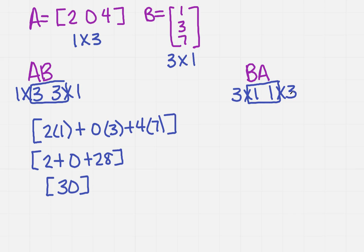How are you going to do that? It's actually much easier. I want to rewrite it because it'll make it easier if we see B first. So we've got 1, 3, and 7, and then we're multiplying by 2, 0, and 4. I need a 3 by 3 matrix.